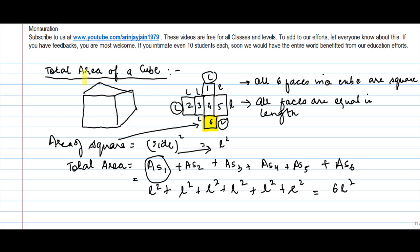So we conclude that total area of a cube is equal to 6L² where L represents the length of one side of a square.